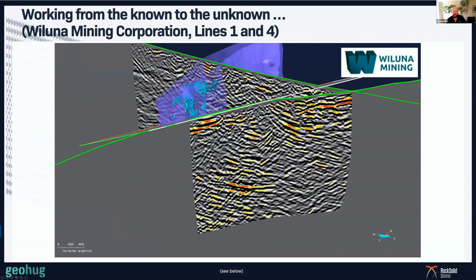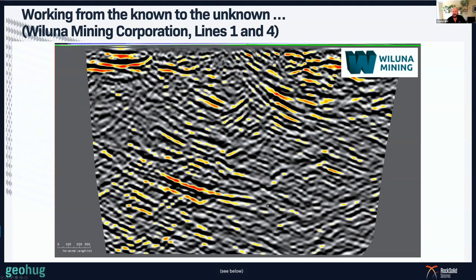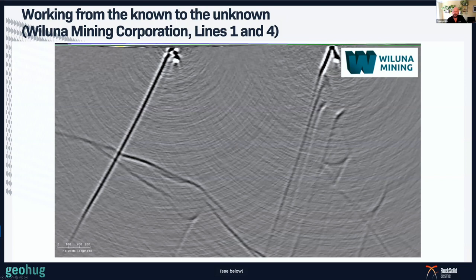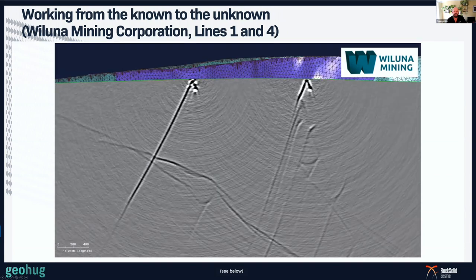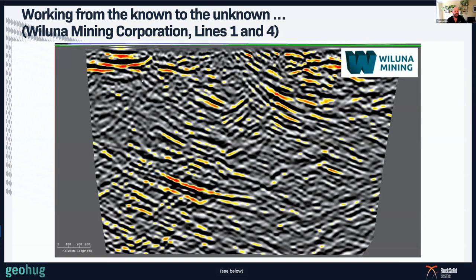That tells us that when we see things dipping with an apparent shallow dip to the north on this line, they are likely to have a similar orientation to the north-south series of faults dipping to the east. So things dipping in that direction on this line are probably faults. The forward model also says that anything dipping to the north on this section is probably a fault, and anything dipping to the south is likely to be stratigraphy — so you can distinguish structural responses from stratigraphic responses by their apparent dip direction.